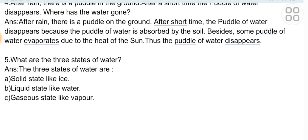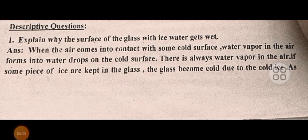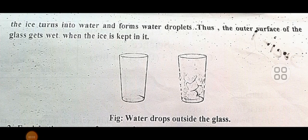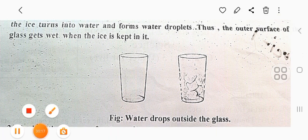Descriptive question one: Explain why the surface of a glass with ice water gets wet. Answer: When air comes into contact with a cold surface, water vapor in the air forms into water drops on that cold surface. When pieces of ice are kept in a glass, the glass becomes cold due to the ice. As the ice turns the glass cold, water vapor in the air condenses and forms water drops on the outer surface of the glass — this is the water cycle in action.